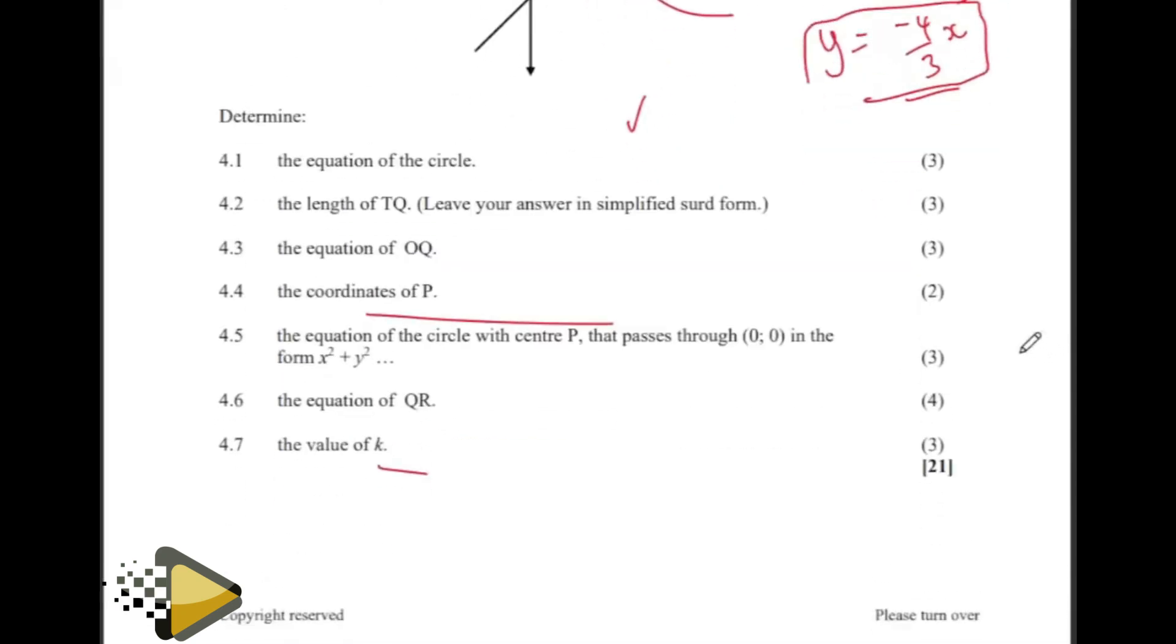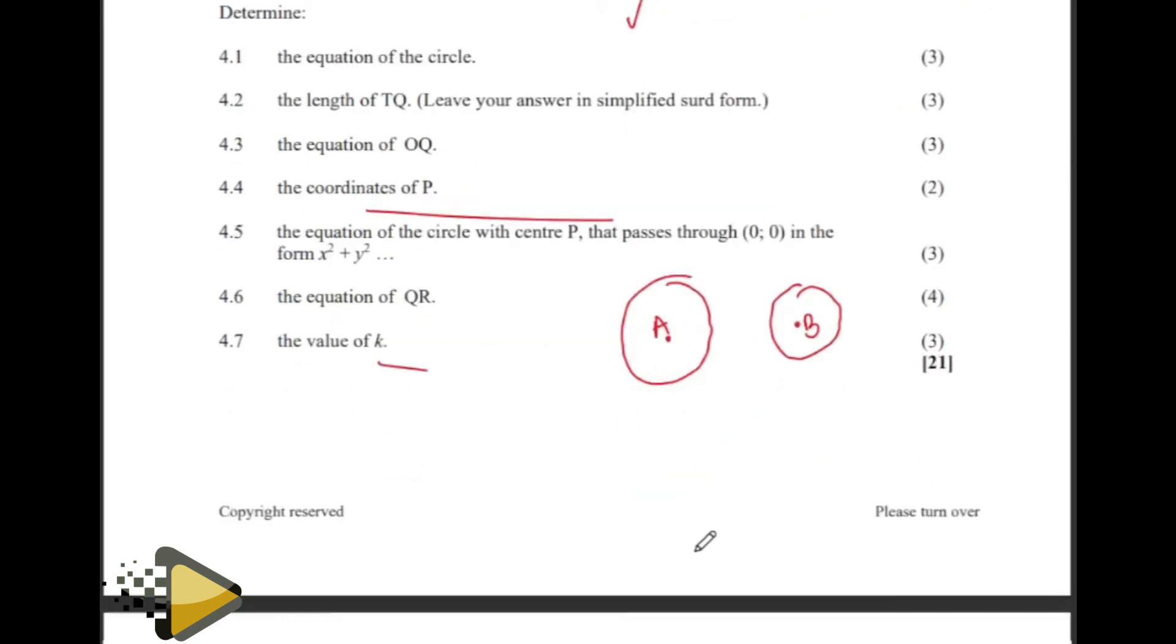Before I leave it, there is this question that talks about two circles. Let's say we have two circles. This circle with center A and then we have another circle that is B. The question can come and ask you to prove whether these circles are touching at one point, at two points, or they are not touching at all. Let me have another scenario here, where the circles are touching at one point. And then the last scenario, where the circles are now touching at two points.